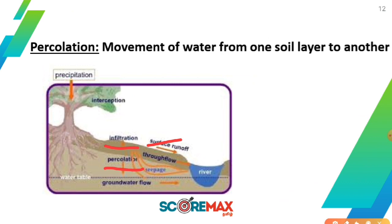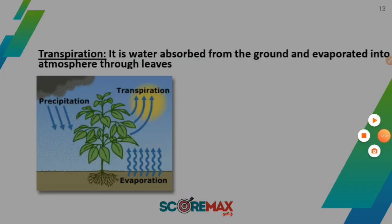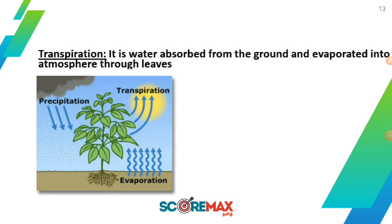This is the ground water flow. Next is transpiration — it is water absorbed from the ground and evaporated into the atmosphere through leaves. We precipitate the water, drain through all the leaves, and it is evaporated forming clouds. If you have water in the trees, then it is transpiration — that is the name of transpiration.